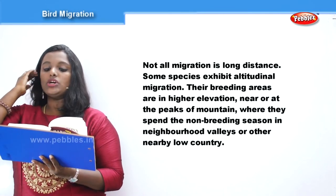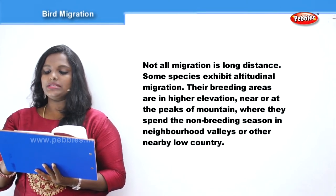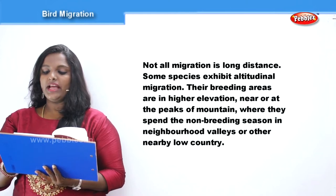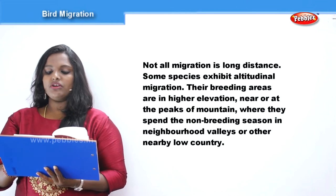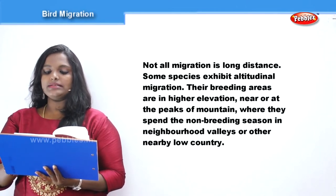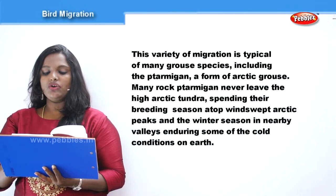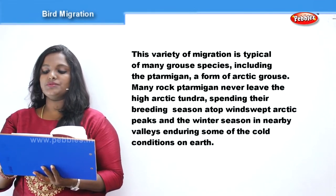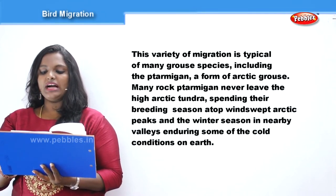Not all migration is long distance. Some species exhibit altitudinal migration — their breeding areas are in higher elevations near or at the peaks of mountains, while they spend the non-breeding season in neighboring valleys or other nearby low country. This variety of migration is typical of many grouse species, including the ptarmigan, a form of Arctic grouse.